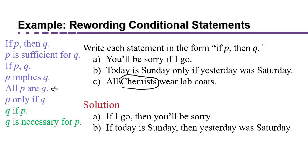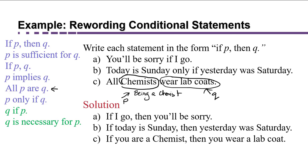So what we do is we change that to being a chemist or something of that nature, so that we have a statement. He is a chemist. They are chemists. Now we're going to change it to if then form knowing that something like that is our P, and something about wearing lab coats is going to be our Q. For example we could say if you are a chemist then you wear a lab coat.